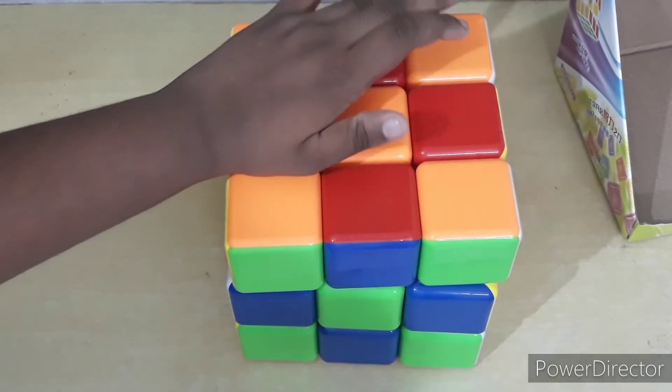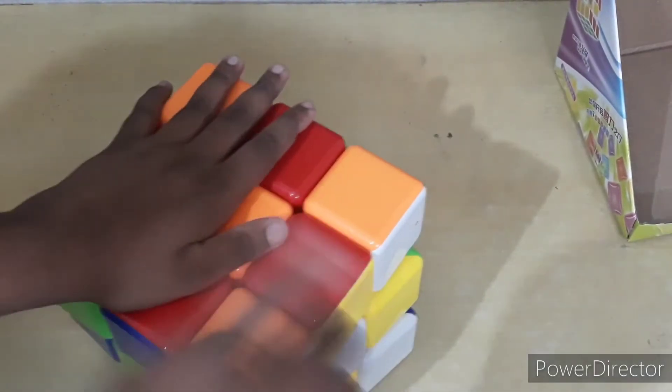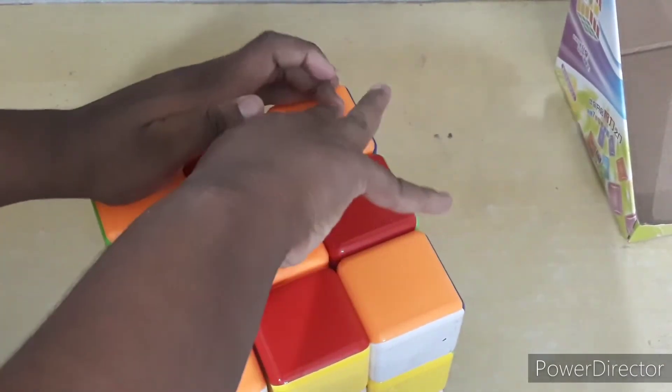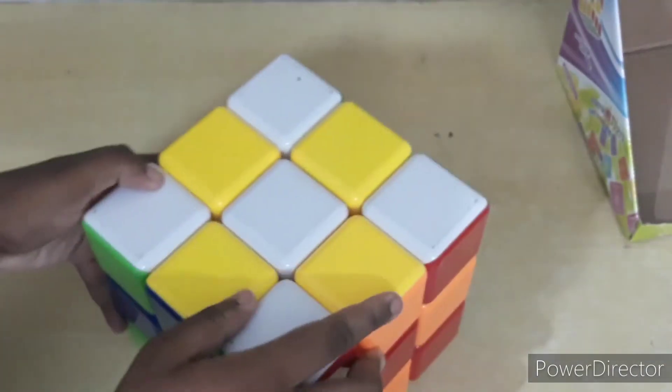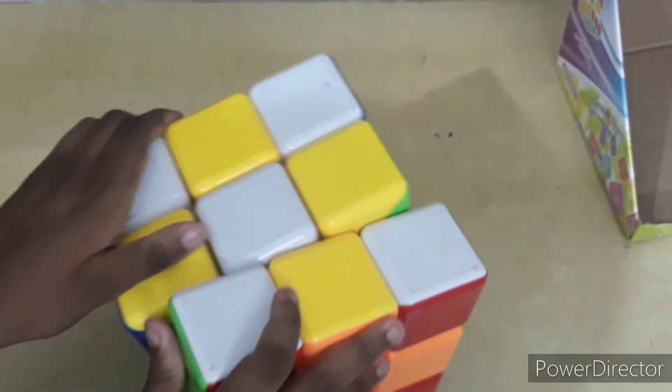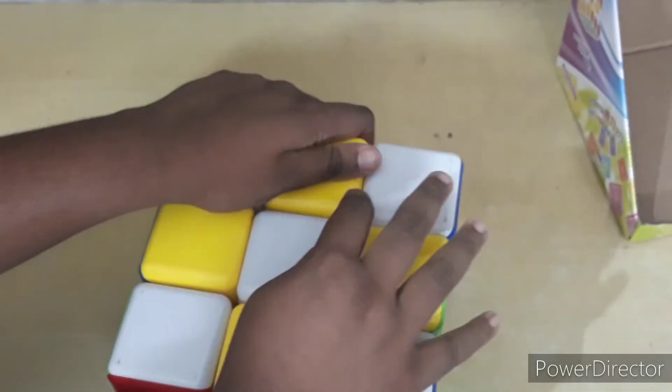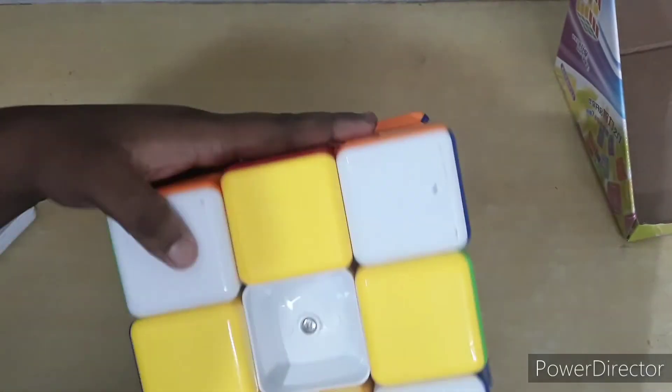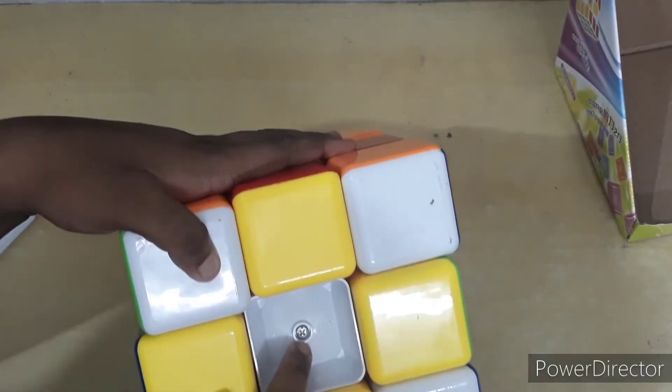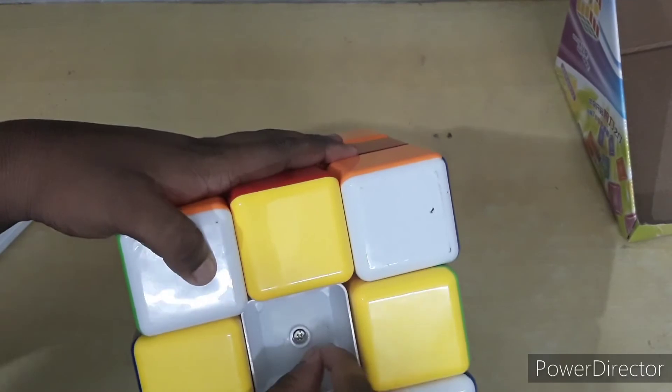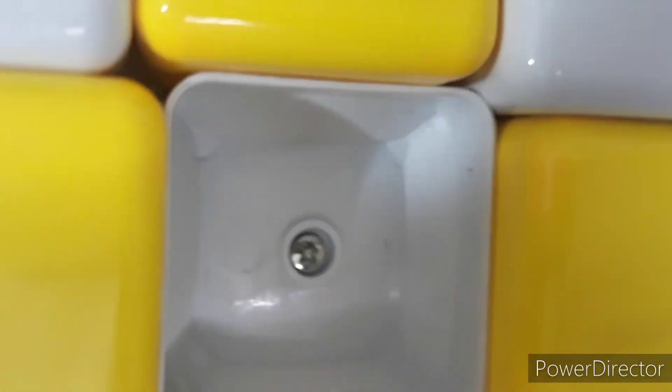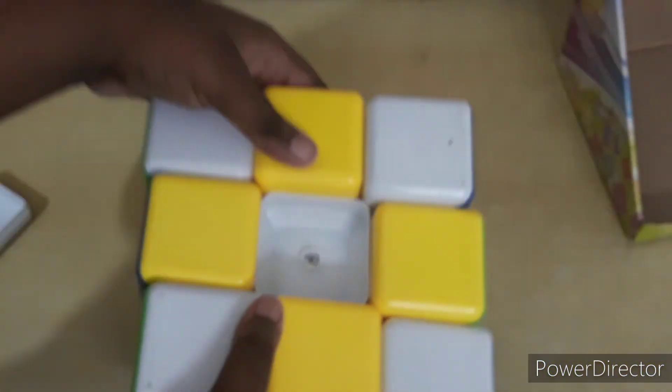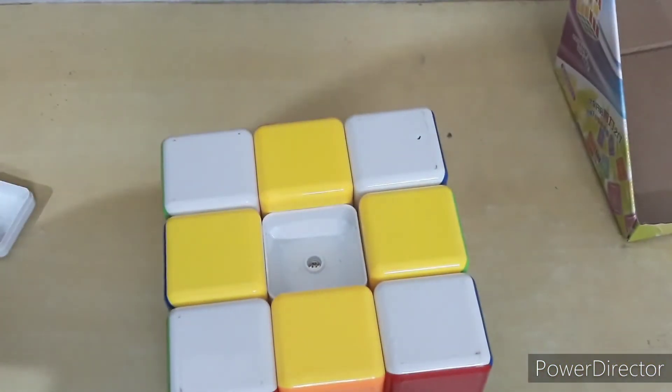But there's one thing I hate about this cube - that's its mechanism. It's still that old kind of mechanism. Look at this, look at the screws. This is the old type screw mechanism which we played with a little while back.